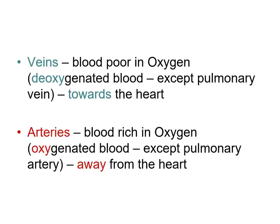Before discussing further about how blood is circulated, I would like you to remember these important facts. The human body has two main blood vessels: the veins and the arteries. The veins carry blood that is poor in oxygen, also called deoxygenated blood. The exception to this is the pulmonary vein, which contains oxygenated blood. In all cases, including the pulmonary vein, veins always carry blood towards the heart.